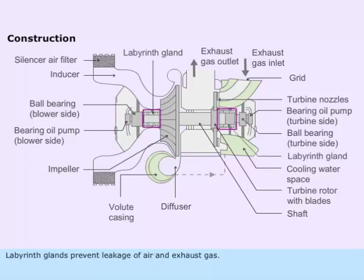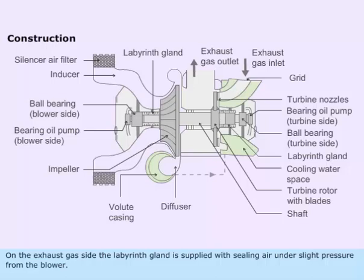Labyrinth glands prevent leakage of air and exhaust gas. On the exhaust gas side, the labyrinth gland is supplied with sealing air under slight pressure from the blower.